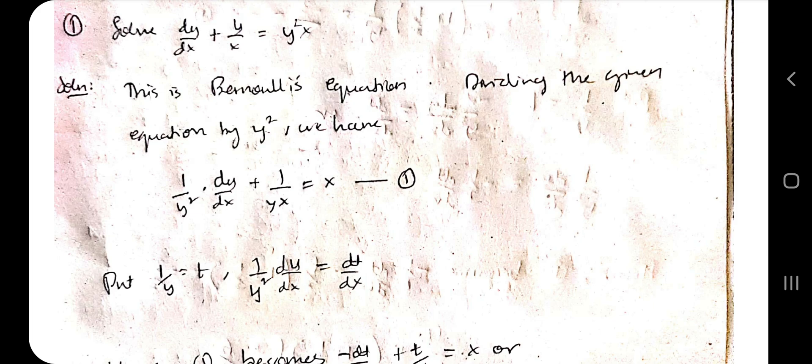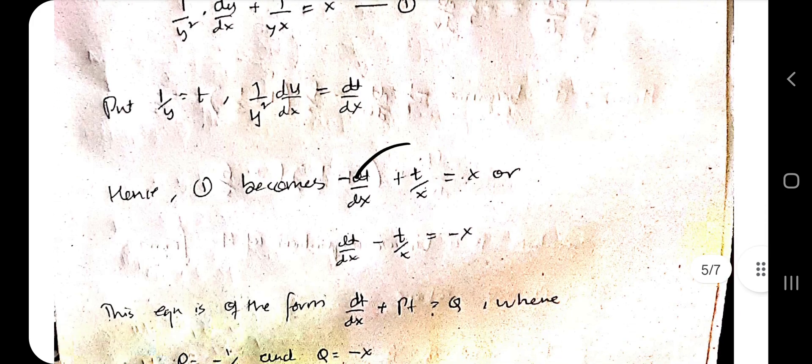After dividing, observe that the equation is not yet in standard form. Take the substitution: let t equal 1/y, so 1/y-squared times dy/dx equals dt/dx. Substitute to convert everything into t-terms, giving a linear equation in t. Identify P and Q, apply the integrating factor formula e-to-the-power integral of P dx, and write the solution as t times the integrating factor equals the integral of Q times the integrating factor, plus c.